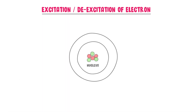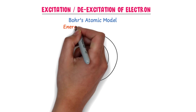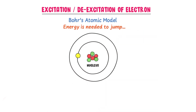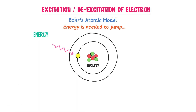Let us consider an atom. Let this electron be present in the first energy level. According to Bohr's atomic model, energy is needed by this electron to jump from the first energy level to the second energy level. Let's say I provide 10.2 electron volt energy to this electron — it will be excited and will move from the first energy level to the second energy level.